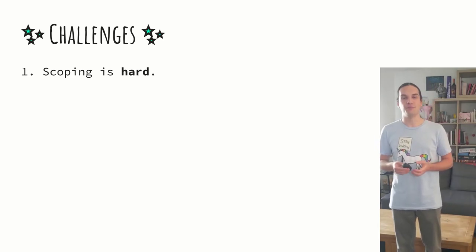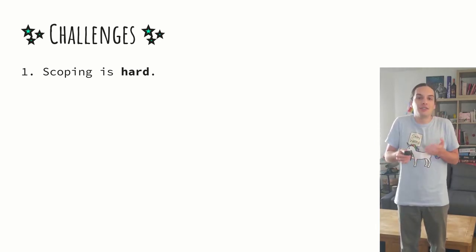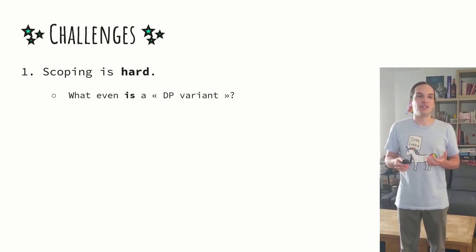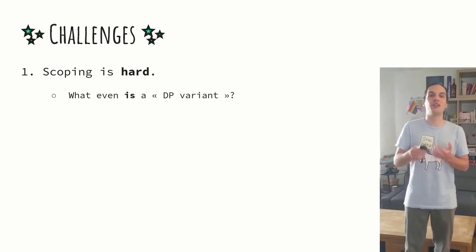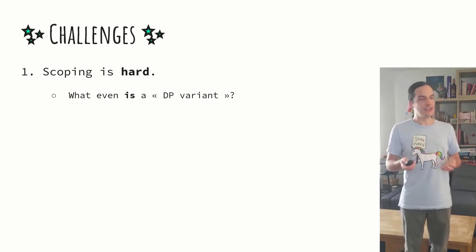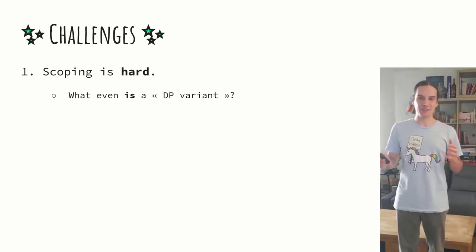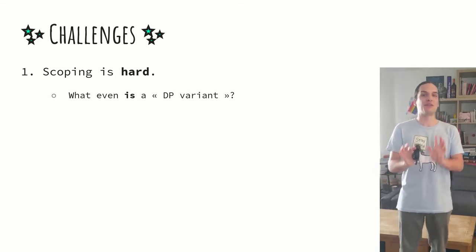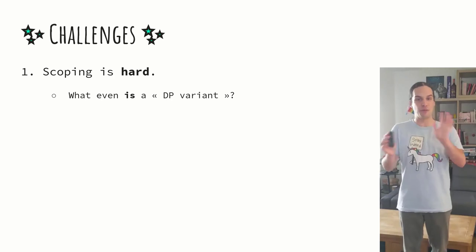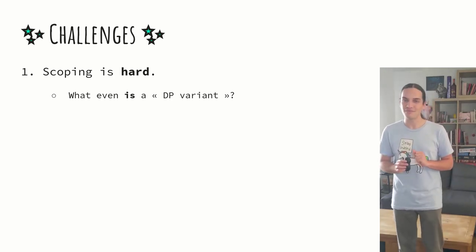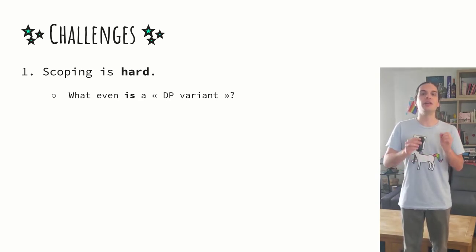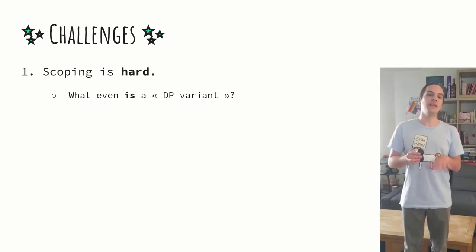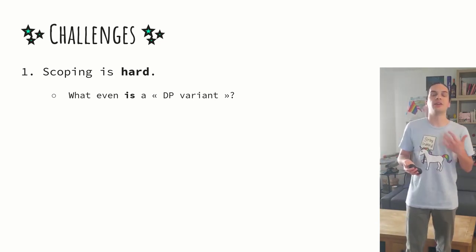The first problem is that scoping is hard. Once we decided that we wanted to exhaustively list definitions, there's an obvious question here: what are we listing anyway? Initially, we were very optimistic. We said we want to list privacy definitions. Then we quickly realized that we needed to restrain ourselves to data privacy definitions, because there are many other completely different fields. And we actually ended up limiting ourselves to only differential privacy variants and extensions.